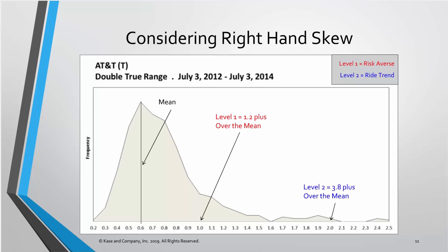This chart shows that distribution. If we have a 1 or 1.2 standard deviation above the mean, that's around the 65th percentile, which risk-averse traders might use. If we're riding the trend, we might use around 3.8 standard deviations, accounting for the right-hand skew — because the distribution of volatility is always skewed to the right. So if we want to use 1, 2, and 3 standard deviation moves, we adjust by about 10 percent at each level: 1, 2.2, and 3.6 — or in this case 1.2 and 3.8. The key idea is we adjust for right-hand skew and use statistically significant levels for our stops, rather than arbitrary multiples of true range.